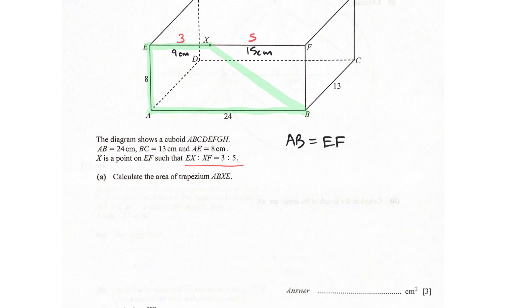So we have a trapezium, the area of the trapezium is just following the typical formula, half times the addition of the parallel sides of 9 plus 24 times the height of 8. That gives us 132 cm squared. That's easy, a really simple 3 marks.